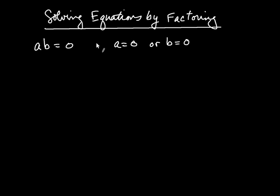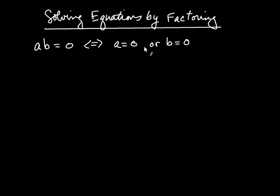These two statements we say in math are logically equivalent. What we mean is: if a times b is zero, then either a is zero or b is zero, or both. And it also goes the other way — if either a is zero or b is zero, then you know that a times b must be zero.